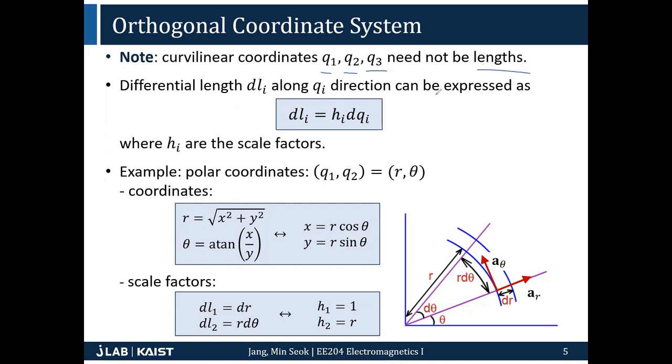Differential length can be achieved by H multiplied by dQ, where H is the scale factor. What do I mean? Let's say XYZ coordinate - the coordinate variables are all length. So length along X direction is just dX, length along Y direction is just dY. Nothing to worry about.